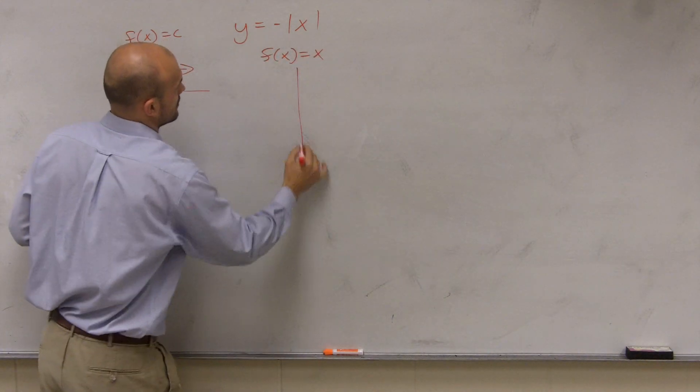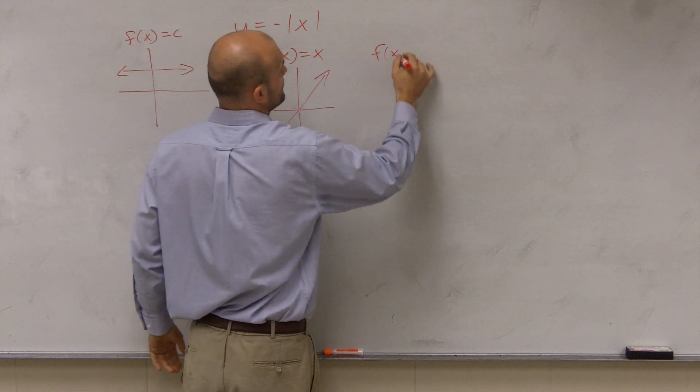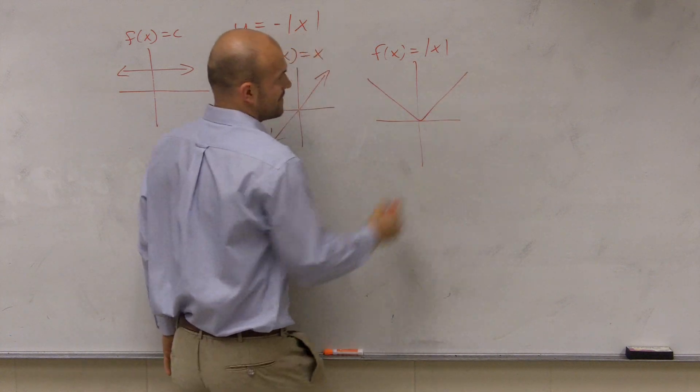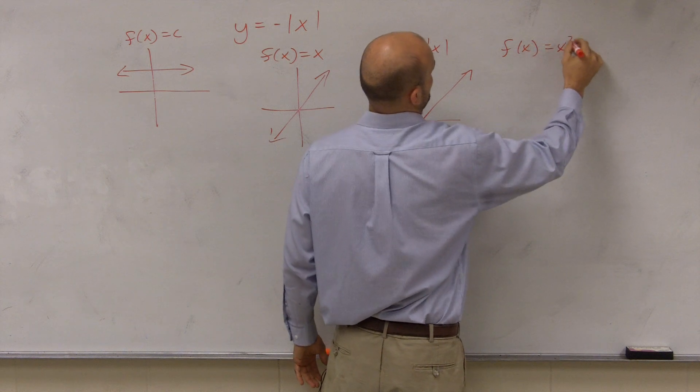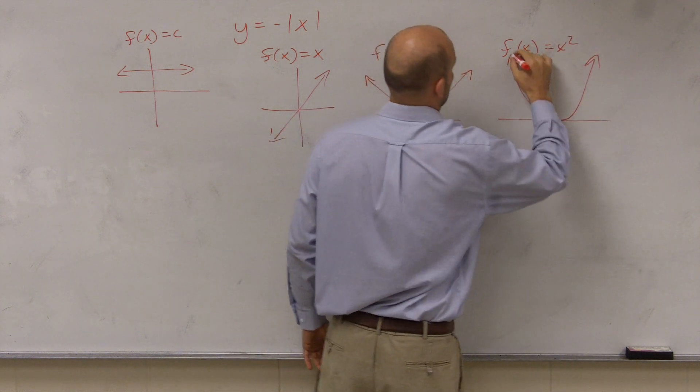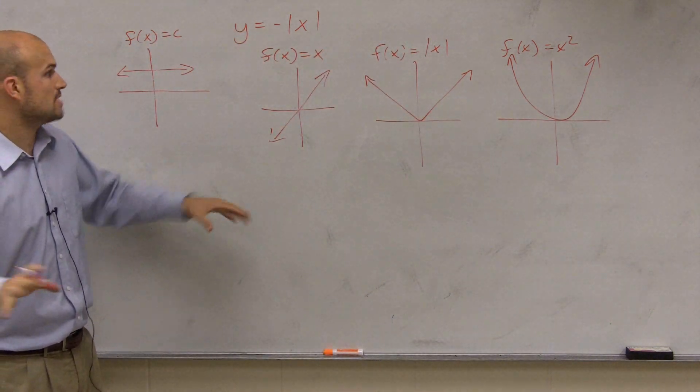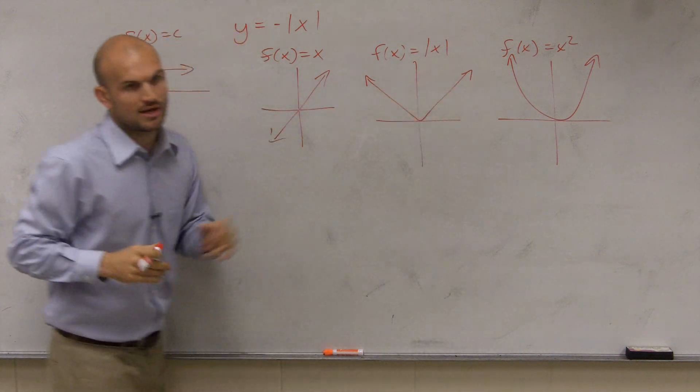We had the absolute value function, which looked like that. And then we had talked about the quadratic function, which looked like that. Those are some rough sketches of them. There's four different types that we talked about: the constant, the identity, the absolute value, and the quadratic.